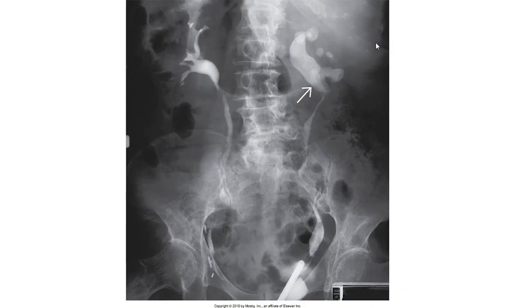For retrograde urography, where contrast is injected via cannula inserted through the urethra into the bladder and into the distal end of the ureter, the patient should drink 4-5 cups of water several hours before the exam.